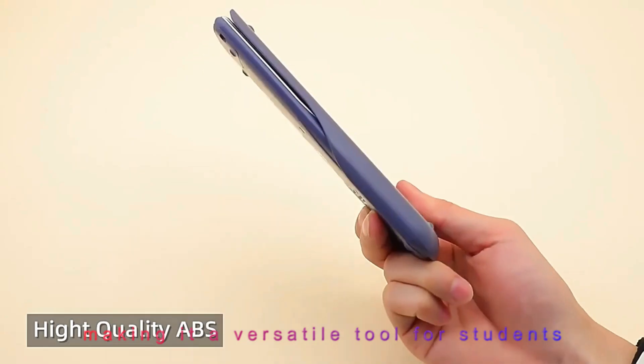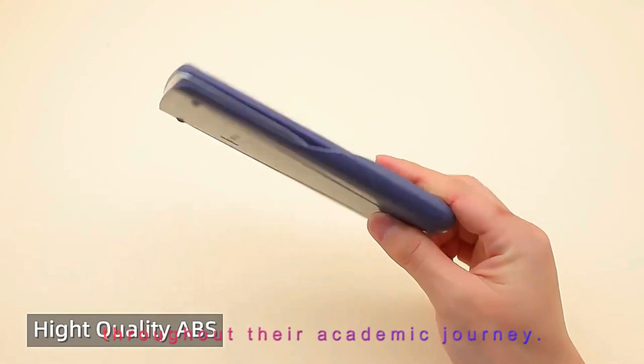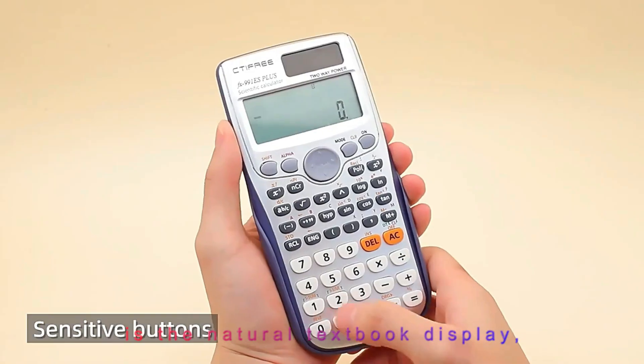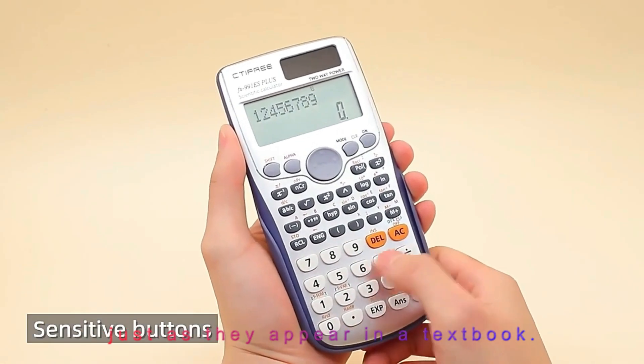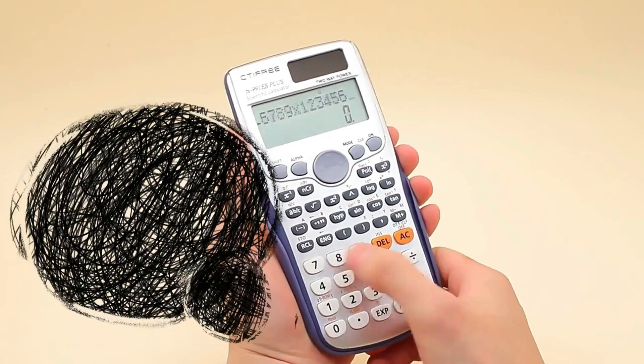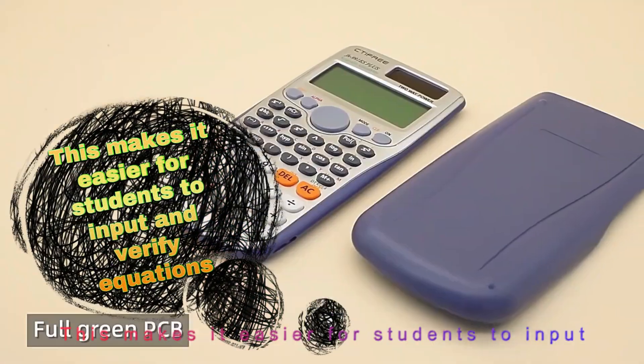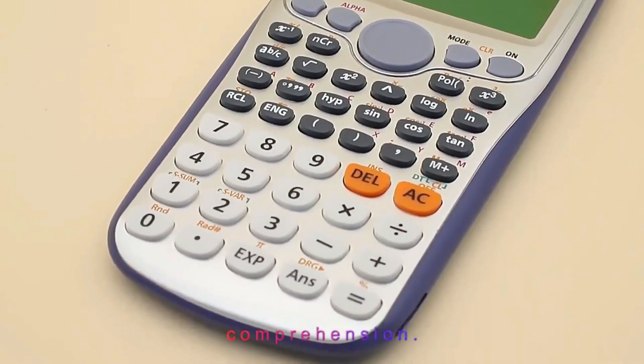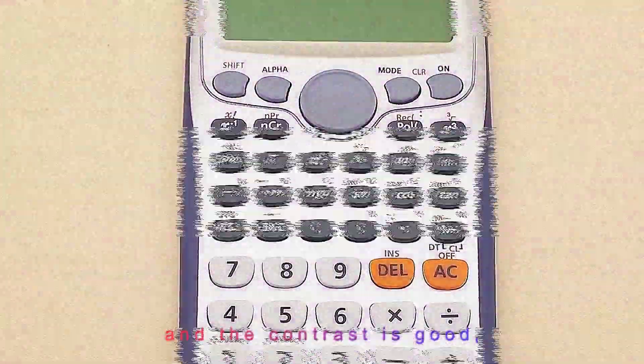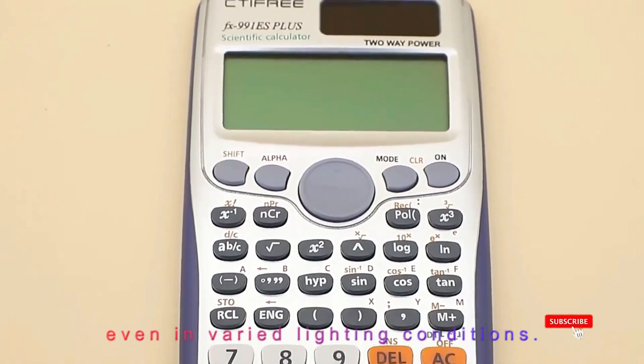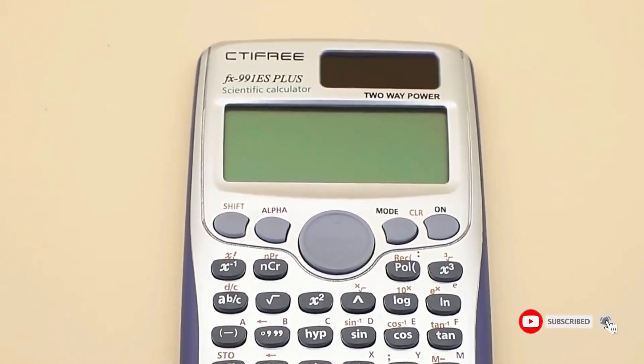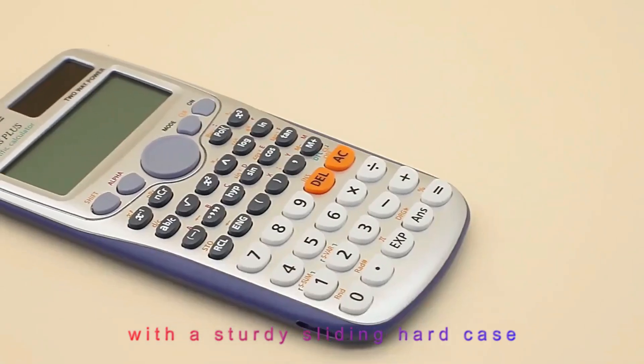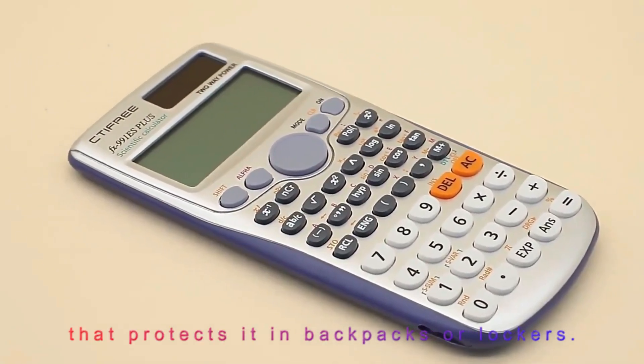One of the standout features is the natural textbook display, which shows expressions and fractions just as they appear in a textbook. This makes it easier for students to input and verify equations, reducing mistakes and improving comprehension. The screen is clear, and the contrast is good, even in varied lighting conditions. The calculator itself is lightweight and compact, with a sturdy sliding hard case that protects it in backpacks or lockers.